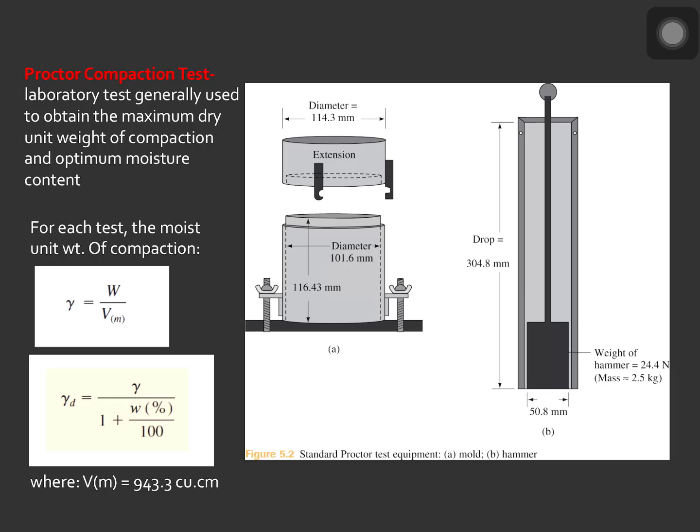The hammer is what you can see on the right side in our screen. The hammer delivers 25 blows in each layer. The hammer weighs 24.4 newtons or approximately 2.5 kilograms in mass and has a drop of 304.8 millimeters.